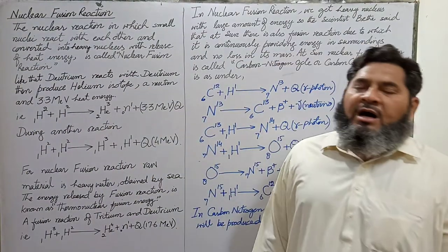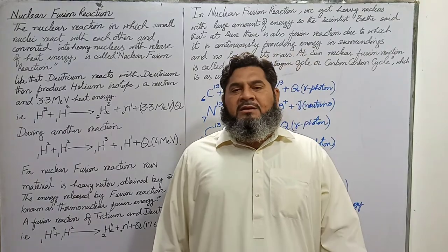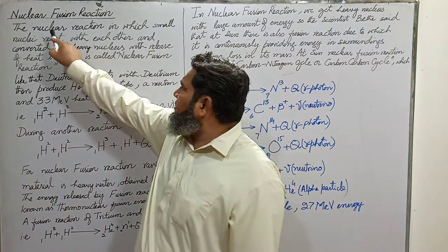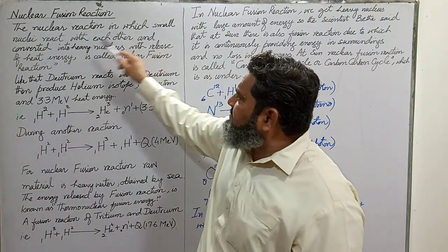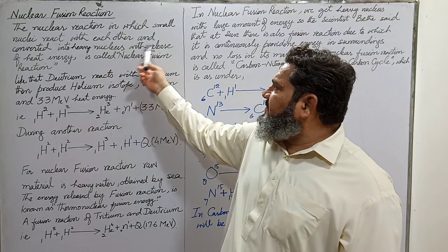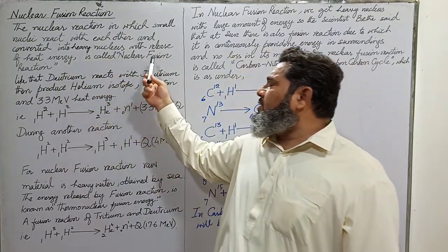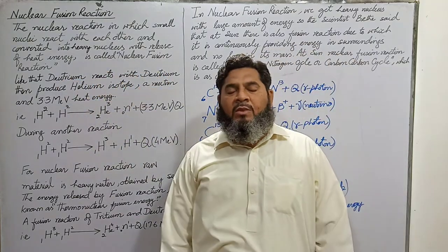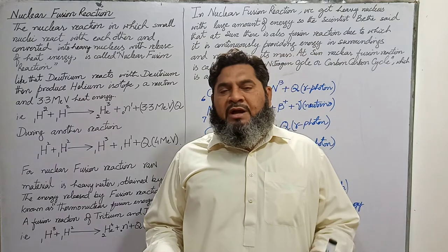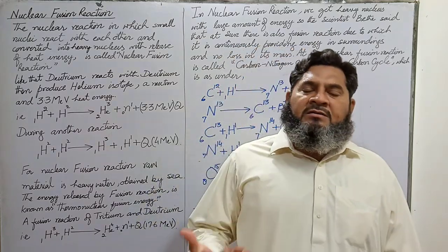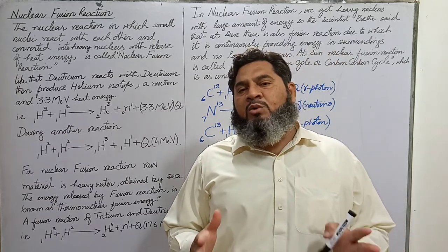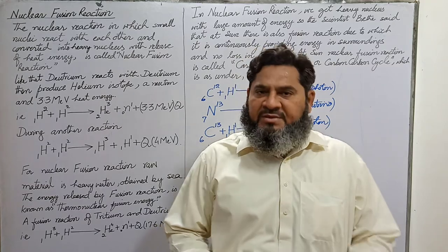Today we will study nuclear fusion reaction in chapter 19. By definition, nuclear fusion reaction is the reaction in which small nuclei react with each other and convert into a heavy nucleus with release of heat energy. In this reaction, two or three small nuclei react with each other and convert themselves into a heavy nucleus, and a huge amount of heat energy in the form of gamma photons is released.